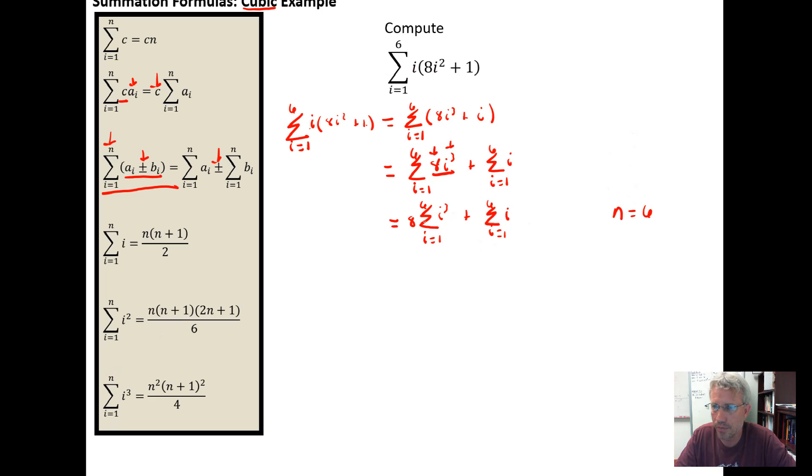I have a formula for the sum of the i³ terms. The sum of i³ when n equals 6 is going to be 6². So it's going to be my constant 8 times 6² times (6 + 1 is 7) squared, and then it's all going to be over 4. Then I'm going to get plus.